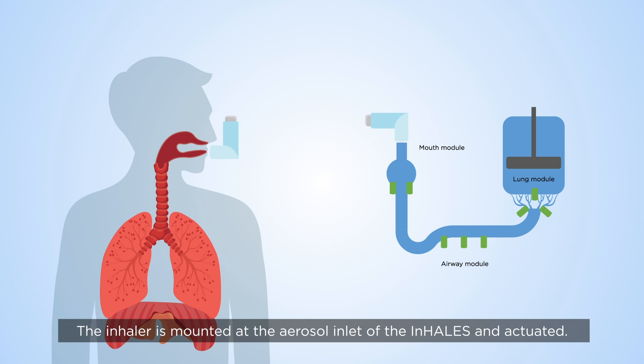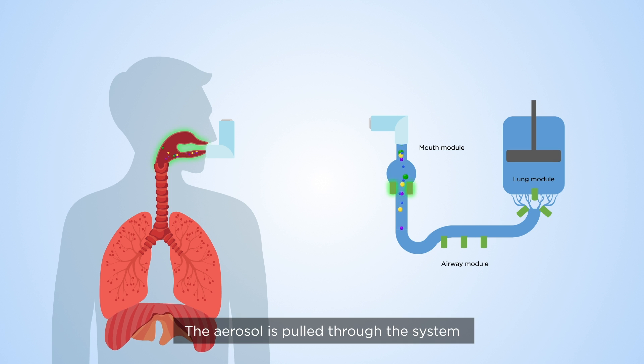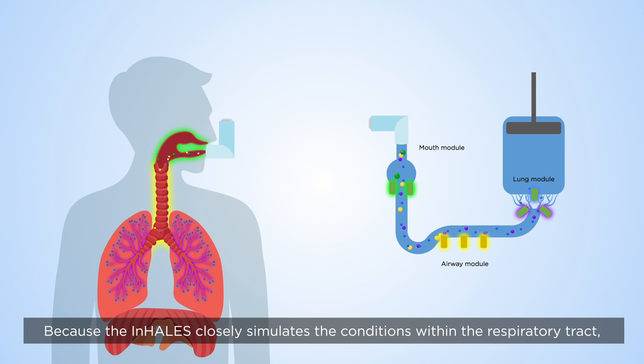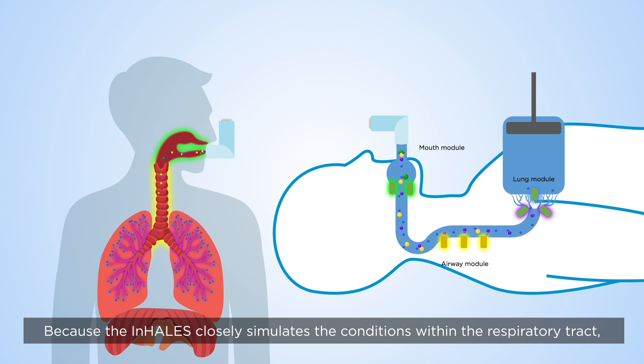The inhaler is mounted at the aerosol inlet of the INHALES and actuated. The aerosol is pulled through the system by the action of the lung module and deposits on the cell cultures.